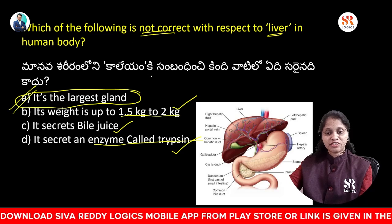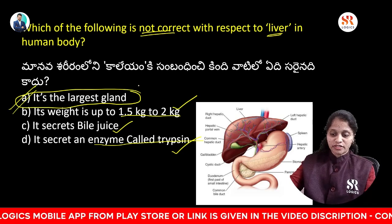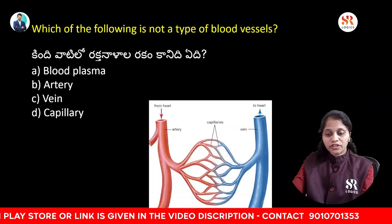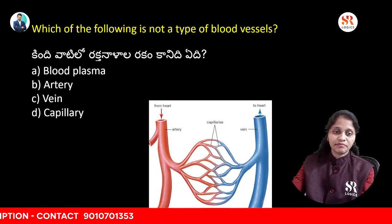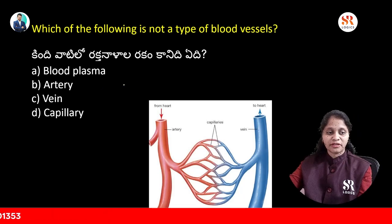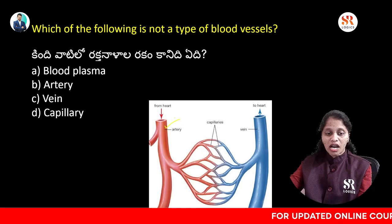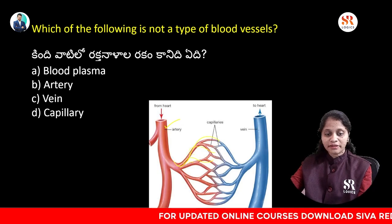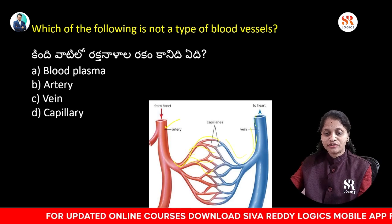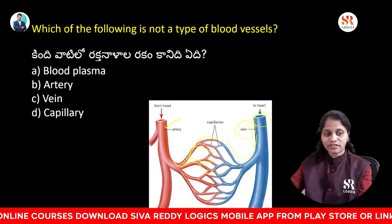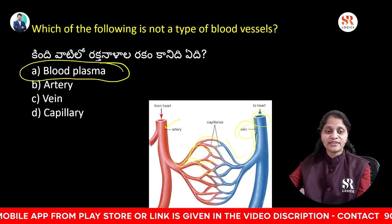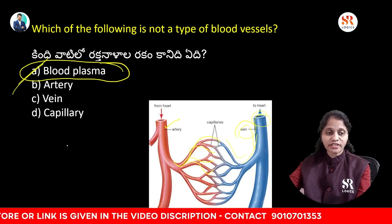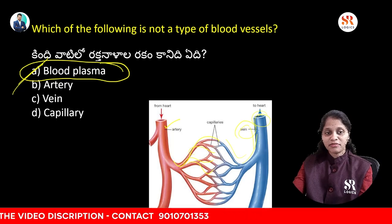Which of the following is not a type of blood vessel? Options include blood plasma, weak capillary. In general, arteries carry blood away from the heart, and through the capillaries it is carried back to the heart through the veins. Blood plasma is not a blood vessel — arteries, veins, and capillaries carry the blood.